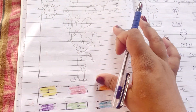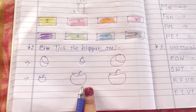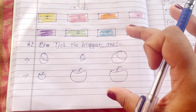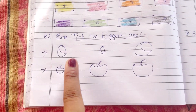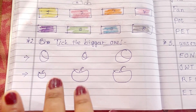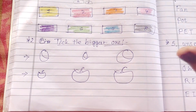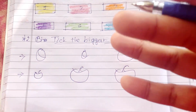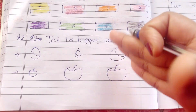Agla worksheet hai 'Tick the biggest one'. Ab tak hum bacho ko kya kara rahe the ki which one is big and which one is small. Toh yahan pe maine teen shapes diye hue hain, bacho ko jo sabse zyada bada hai, the biggest one, usse tick karna hai. Ya toh circle bhi kar sakte hain, that's totally your choice. Aap isko color karne ko bhi de sakte ho, numbering bhi de sakte ho - aapki marzi. Is ek worksheet ko aap bohot saari varieties mein karva sakte ho.